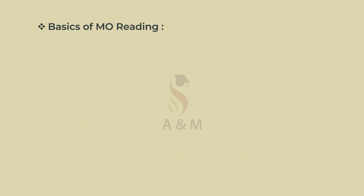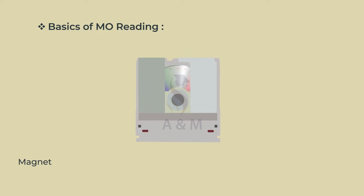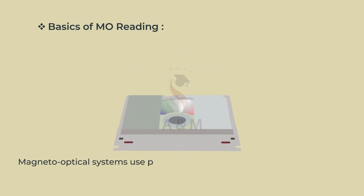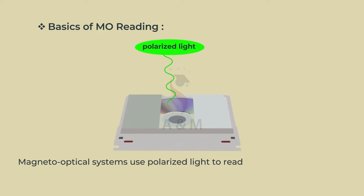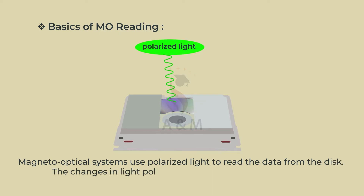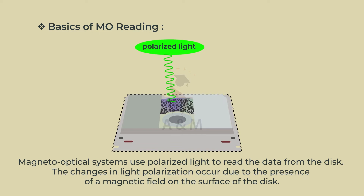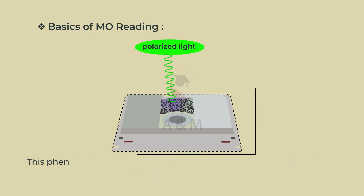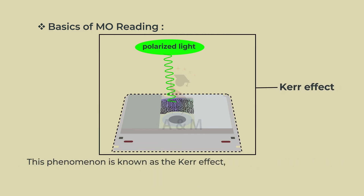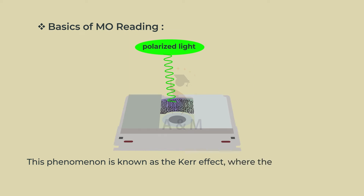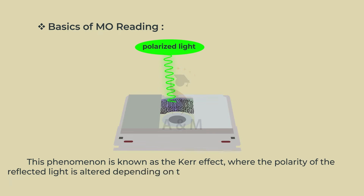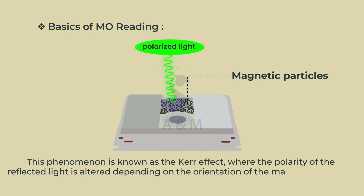Basics of MO reading: Magneto-optical systems use polarized light to read the data from the disk. The changes in light polarization occur due to the presence of a magnetic field on the surface of the disk. This phenomenon is known as the Kerr effect, where the polarity of the reflected light is altered depending on the orientation of the magnetic particles.